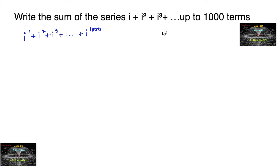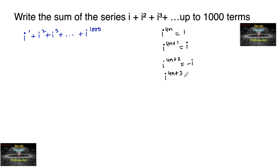We know that i to the power of 4n equals 1, i to the power of 4n plus 1 equals i, i to the power of 4n plus 2 equals i squared, that is minus 1, and i to the power of 4n plus 3 equals i cubed, that is minus i.